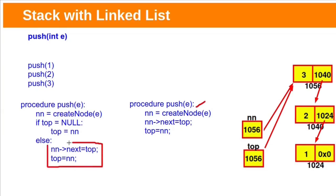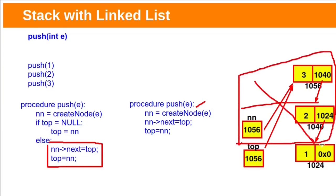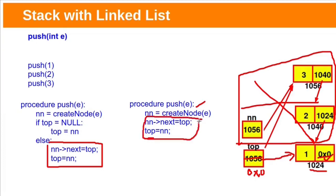We already know those two statements work when the stack is not empty. Let's check when the stack is empty. Initially top is null, so its address is zero. New node's next is initially null. Assigning top (which is zero) into new node's next still gives null — so it works fine. Then copy the new node address into top. So those two statements work even when the stack is empty, and we can use the simplified code. Both approaches work the same way, but the explicit check may be clearer for understanding.